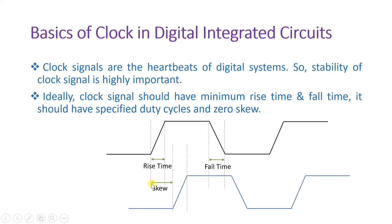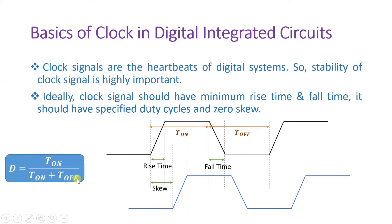Skew is essentially a delayed version of a clock with respect to the clock given to the primary block. Now let us try to understand what is duty cycle. If you observe this clock, this time period is t-on, where the signal is active high, and this time period is t-off, where the signal is active low. Duty cycle is t-on divided by (t-on plus t-off). In 99 percent of digital integrated circuits you will find the duty cycle is 50 percent, and it should be well defined before we operate with the clock signal.